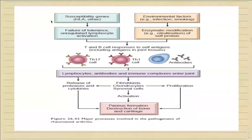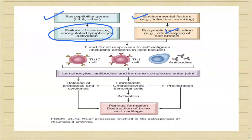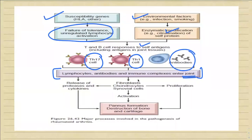To summarize the pathogenesis: susceptibility genes like HLA-DR4 may lead to failure of tolerance and unregulated lymphocyte activation. Environmental factors cause protein citrullination. Together these stimulate T and B cell responses to self-antigens. T helper 1 releases interferon-gamma, T helper 17 releases IL-17, and CD4+ T-cell-stimulated antibodies create an inflammatory reaction wherein lymphocytes, antibodies, and immune complexes enter the joint, leading to fibroblast and chondrocyte proliferation and synovial cell activation, ultimately causing pathogenic pannus formation and destruction of bone and cartilage.